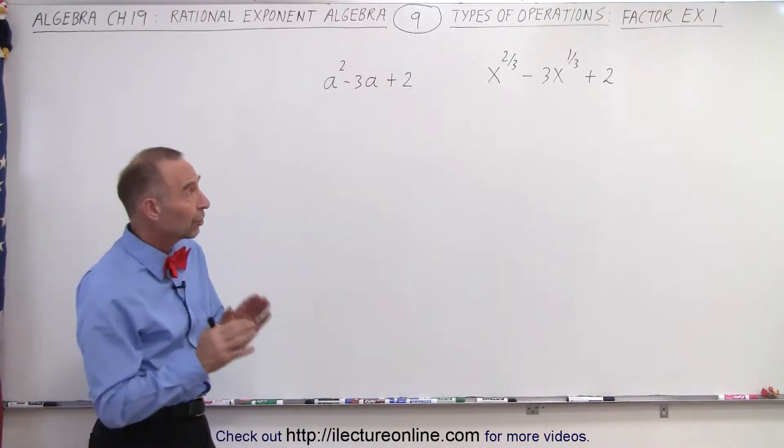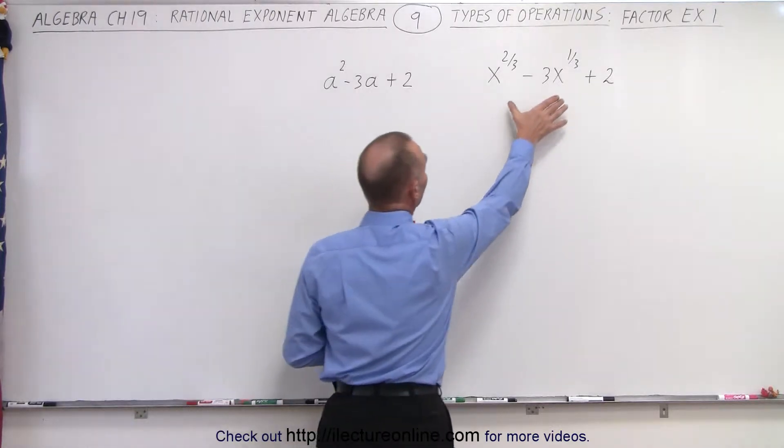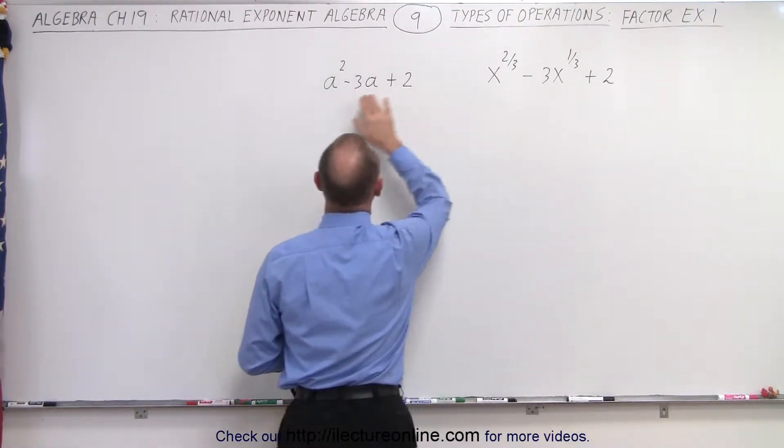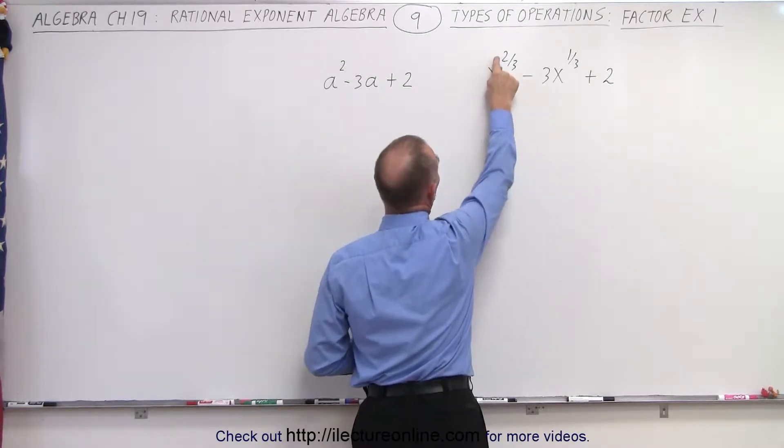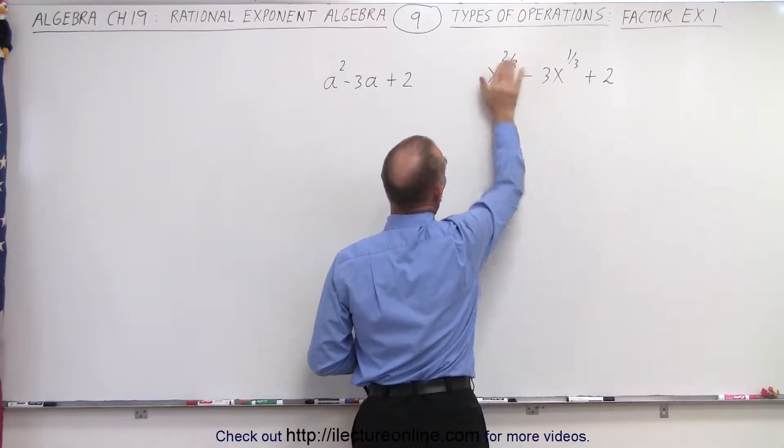Now again, it's a good idea if you can look at this and say that looks very similar to this. If, for example, we saw this as x squared instead of x to the 2/3 power, we get rid of the 5/3.